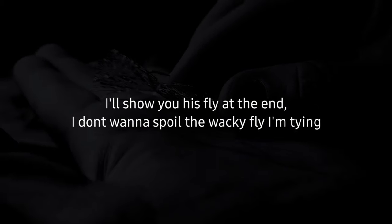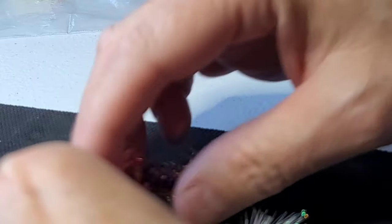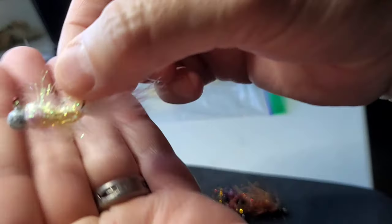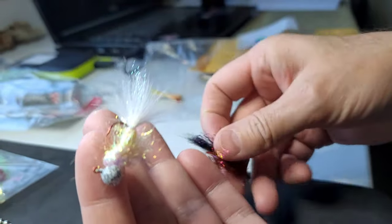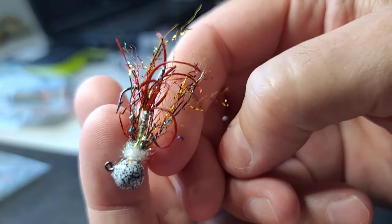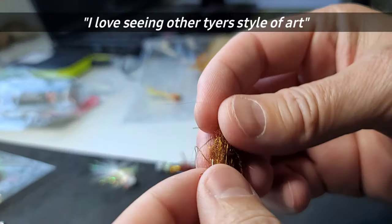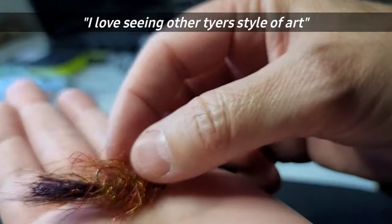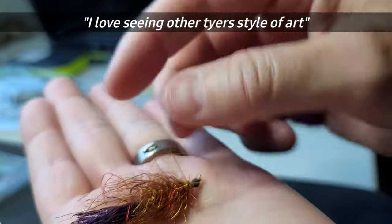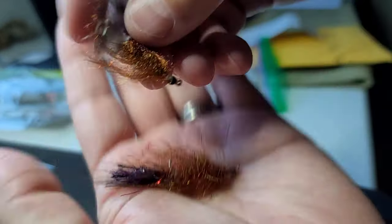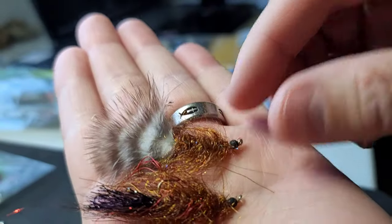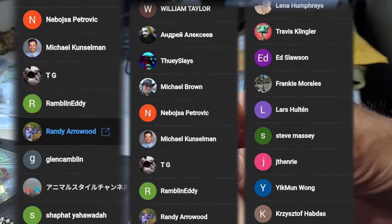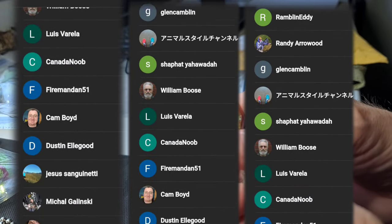This is what inspired me to tie the fly I'm going to tie today. Look at these jigs he ties. Look at this crappie jig - that is quality work. Here's another, isn't that cool? He also sent me these, it's kind of a bugger, woolly bugger leech pattern. Look at this one.